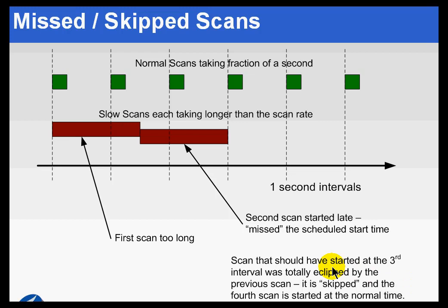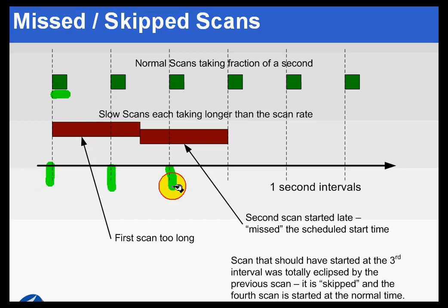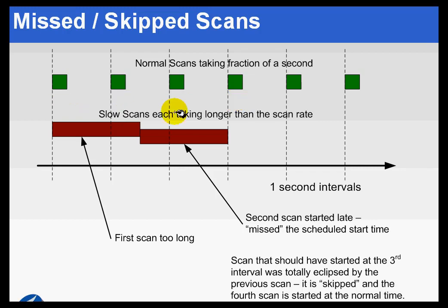Here's an illustration to try to make the point of performance points and the utility of them. Let's pretend that you've got some normal tags that are being scanned in a normal amount of time. For example, let's say these are one-second intervals, and you've got a list of maybe 200 tags, and for that interface those 200 tags are scanned in less than one second. So far, so good.